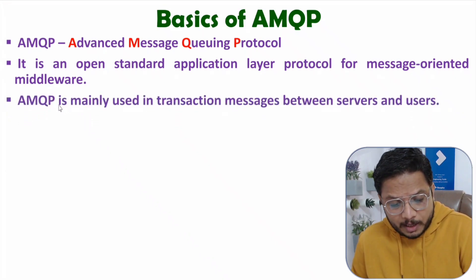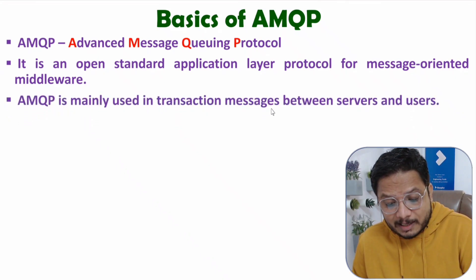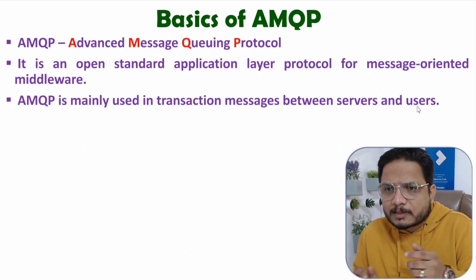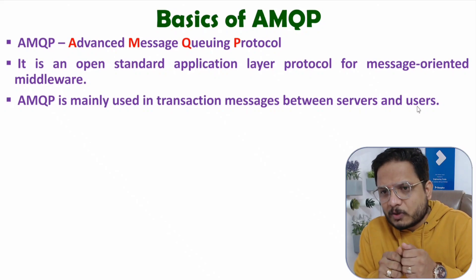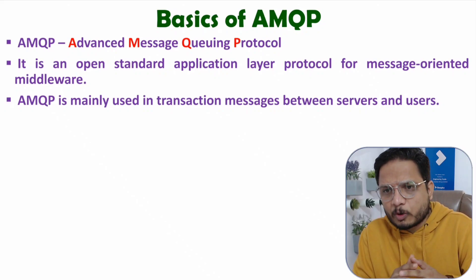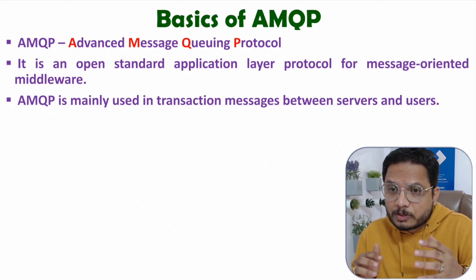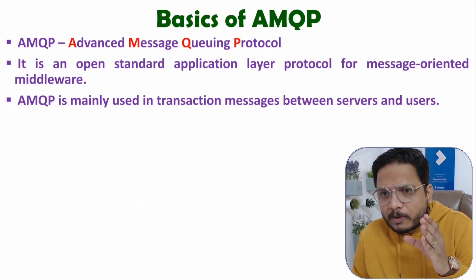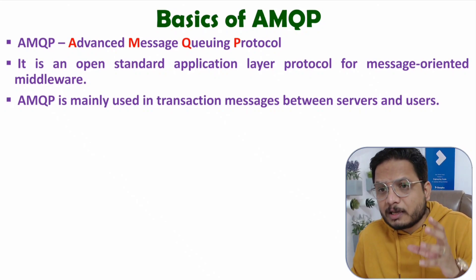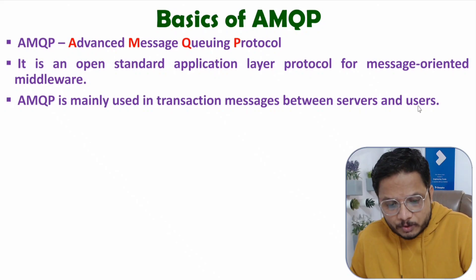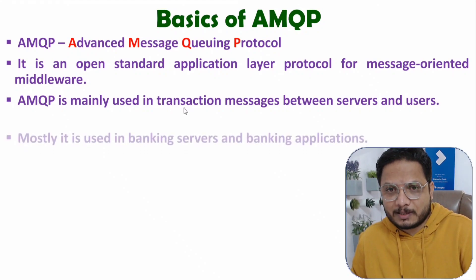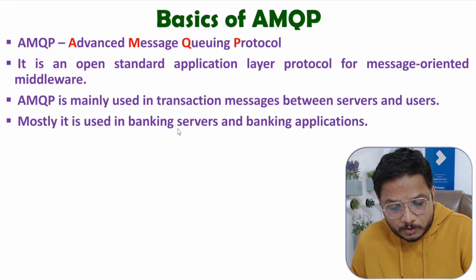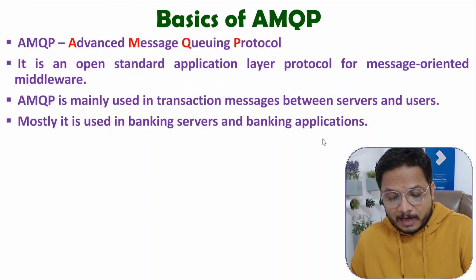AMQP is mainly used in transaction messages between servers and users. Whenever users are using a banking application, this protocol is used. It can also be used in IoT systems. I'll show you a variety of ways AMQP can be used in architecture. It is mostly used in banking servers and banking applications.